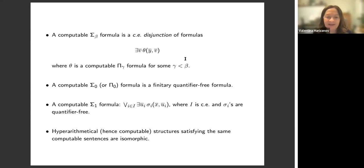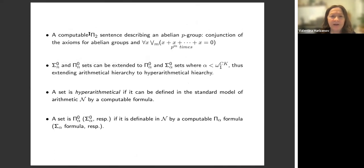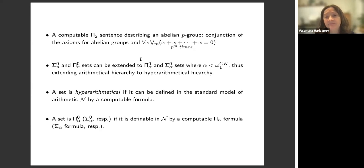Hyperarithmetical structures that satisfy the same computable sentences are isomorphic — computable structures in particular. Computable structures that satisfy the same computable sentences are isomorphic, just the way countable structures satisfying the same L_{ω₁ω} sentences are isomorphic. For example, a computable Π₂ sentence can describe an abelian p-group with the conjunction of all axioms for abelian groups, and the formula: for all x, there is an infinite disjunction over m such that x added p^m times is 0 — telling us about the order of each element.